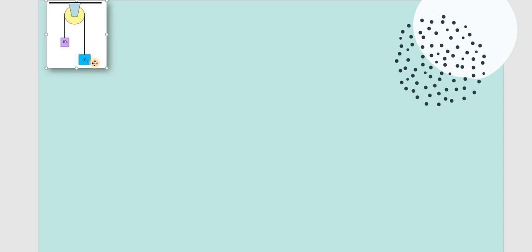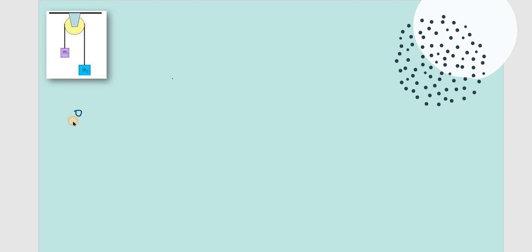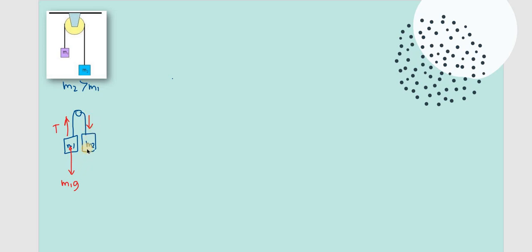Let's start with the vertical pulley. We can redraw this — you have M1 and M2. Given that M2 is greater than M1, we can identify the forces acting here. M1 has weight M1G and a tension force. Since they're connected with a single string, they have the same tension force.